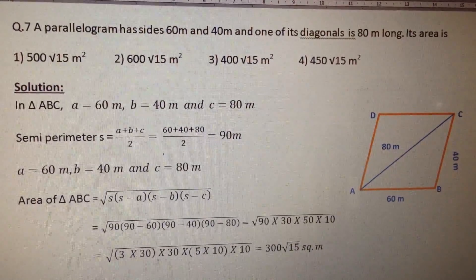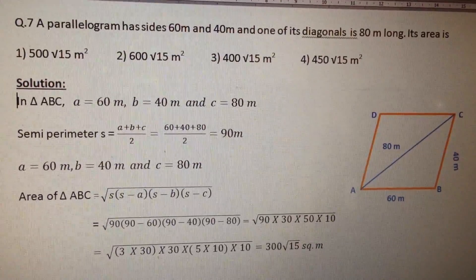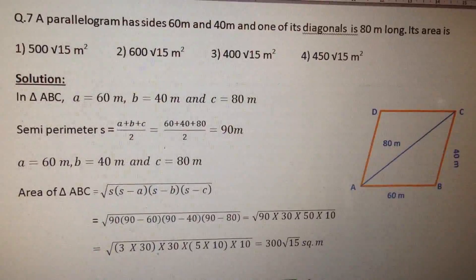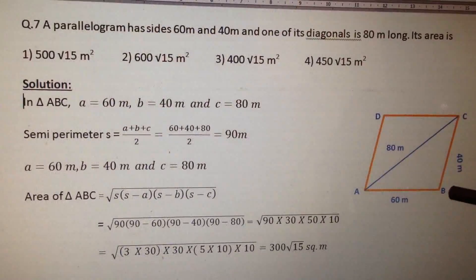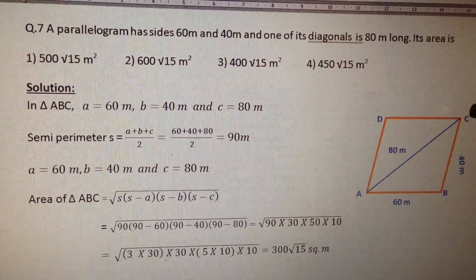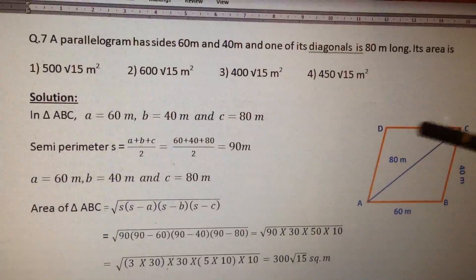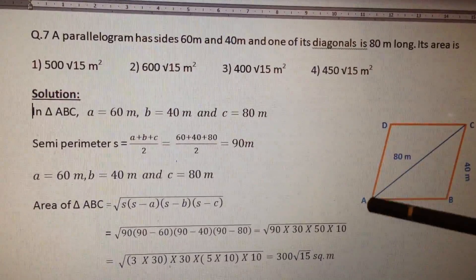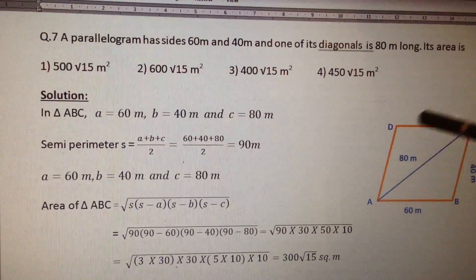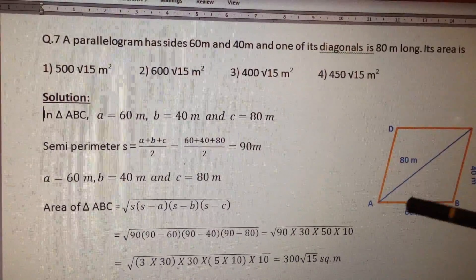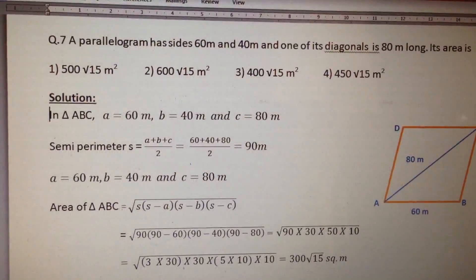Next question. A parallelogram has sides 60 meters and 40 meters and one of its diagonals is 80 meters long. What is its area? ABCD is a parallelogram where AB is 60 meters, BC is 40 meters, and diagonal AC is 80 meters. We are asked to calculate the area of parallelogram ABCD. The diagonal AC divides the parallelogram into two equal triangles, so if we find the area of triangle ABC, it is easy to find the area of the parallelogram.